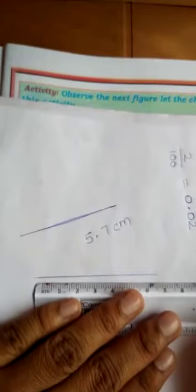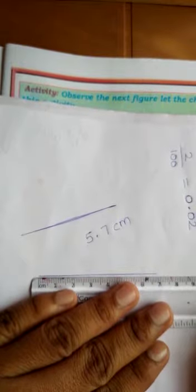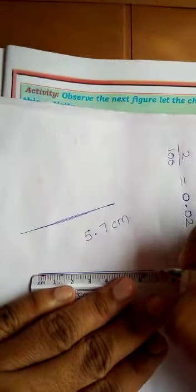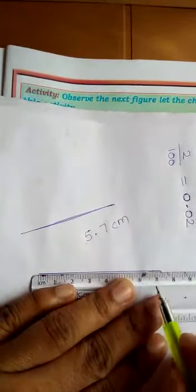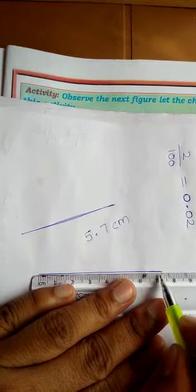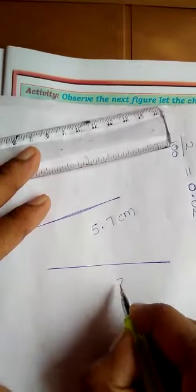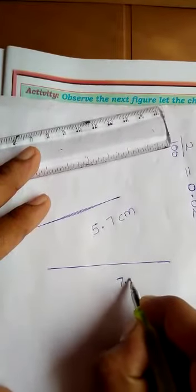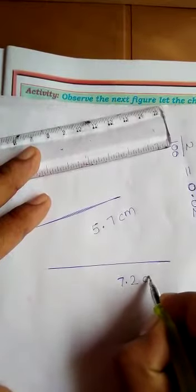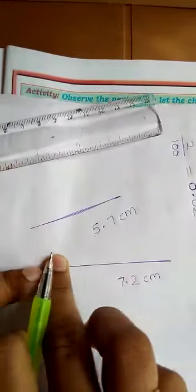I want to measure its length. First, 0 coincides with here. Its length is more than 7 and 2 small divisions. Then its length is written as 7.2 centimeter, which is the length of this line.